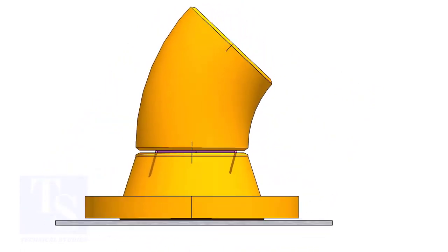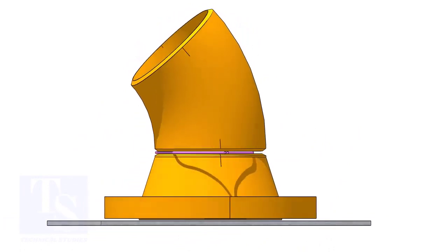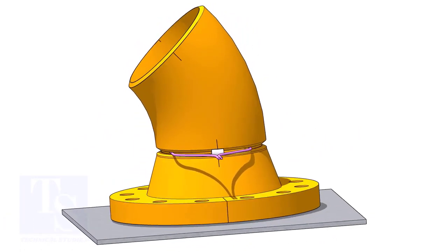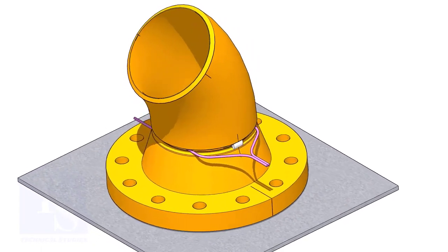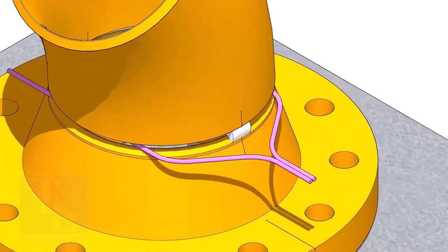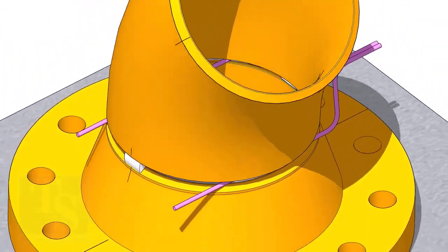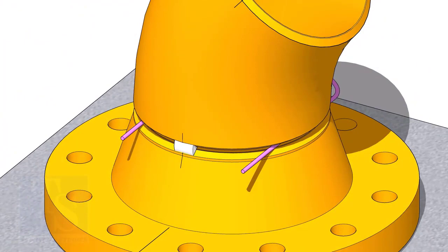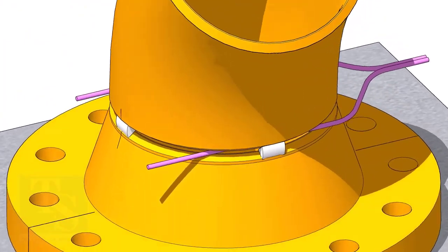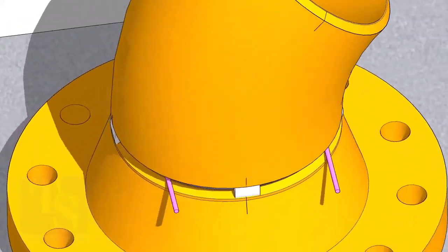Check the gap and the overlap. If correct, tack weld as per the shown sequence. Check the gap on both sides.